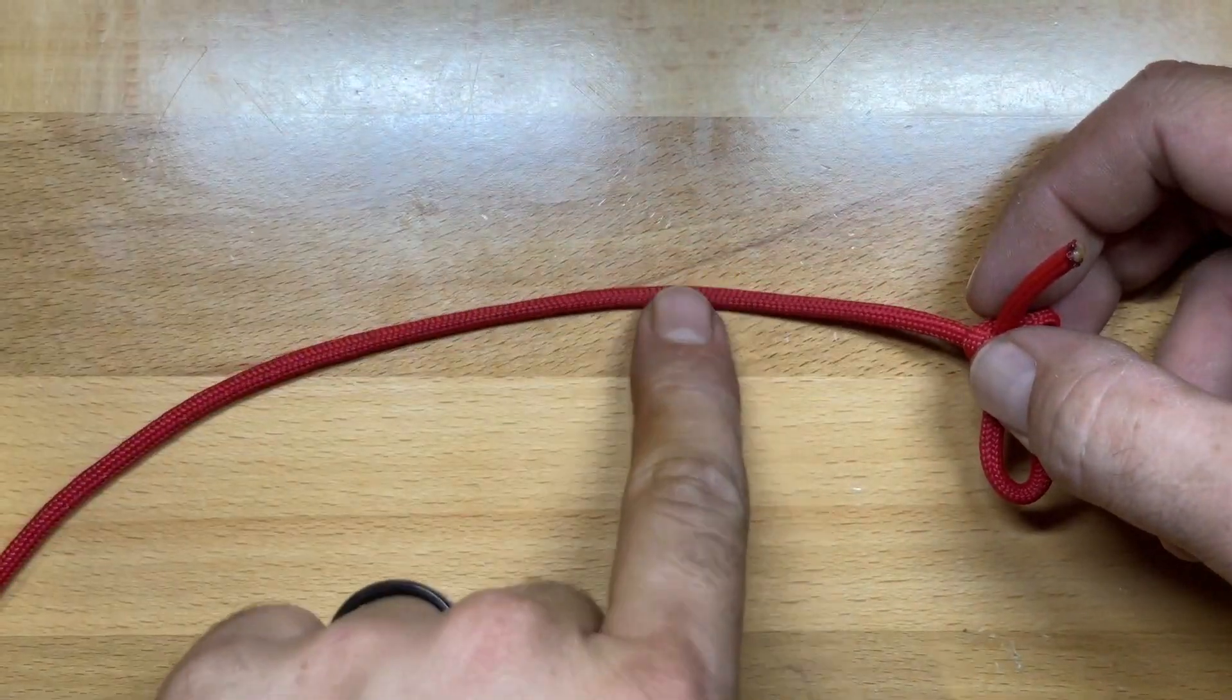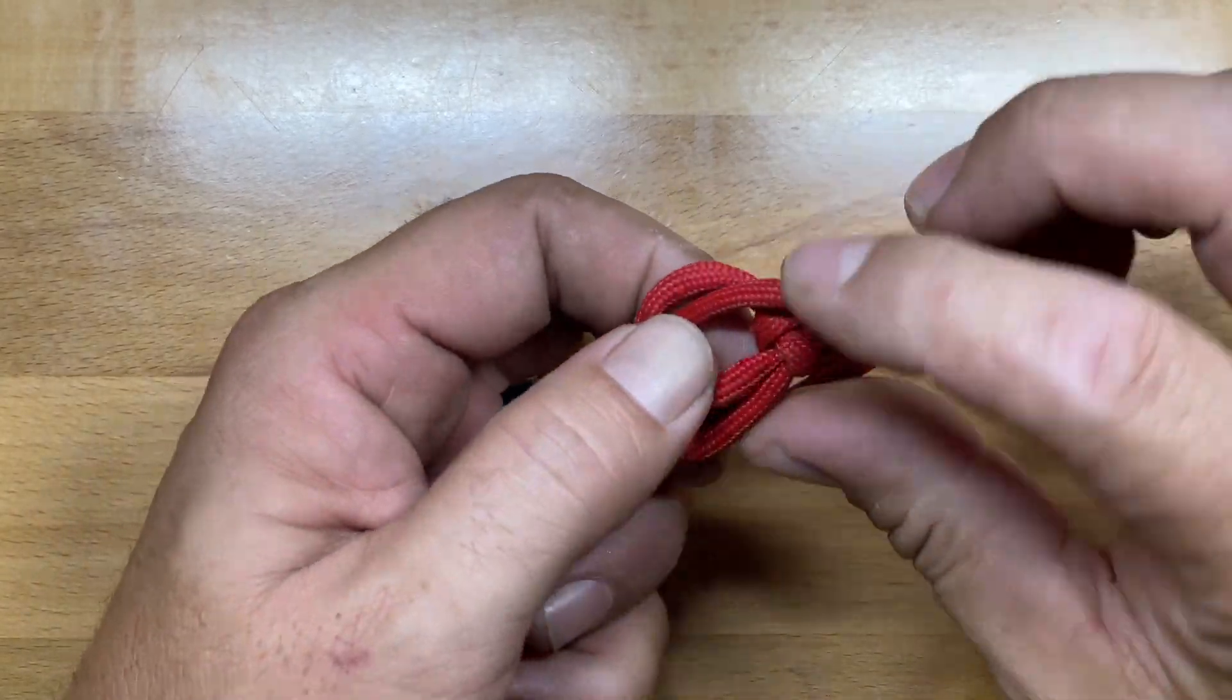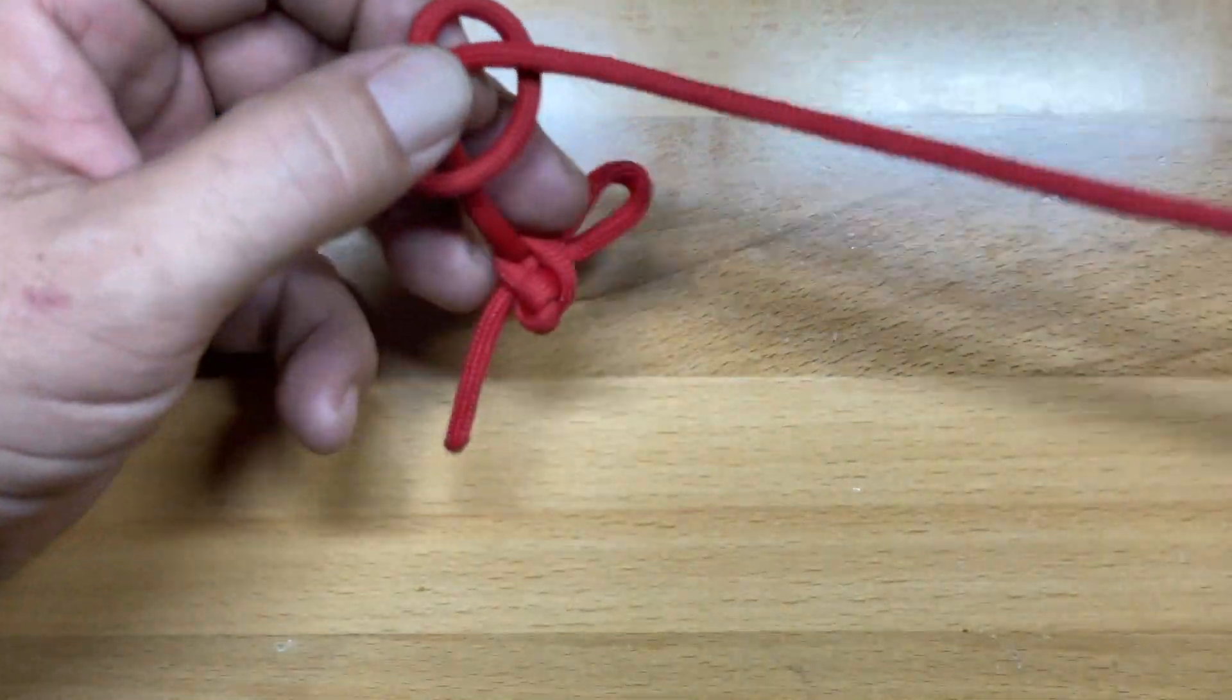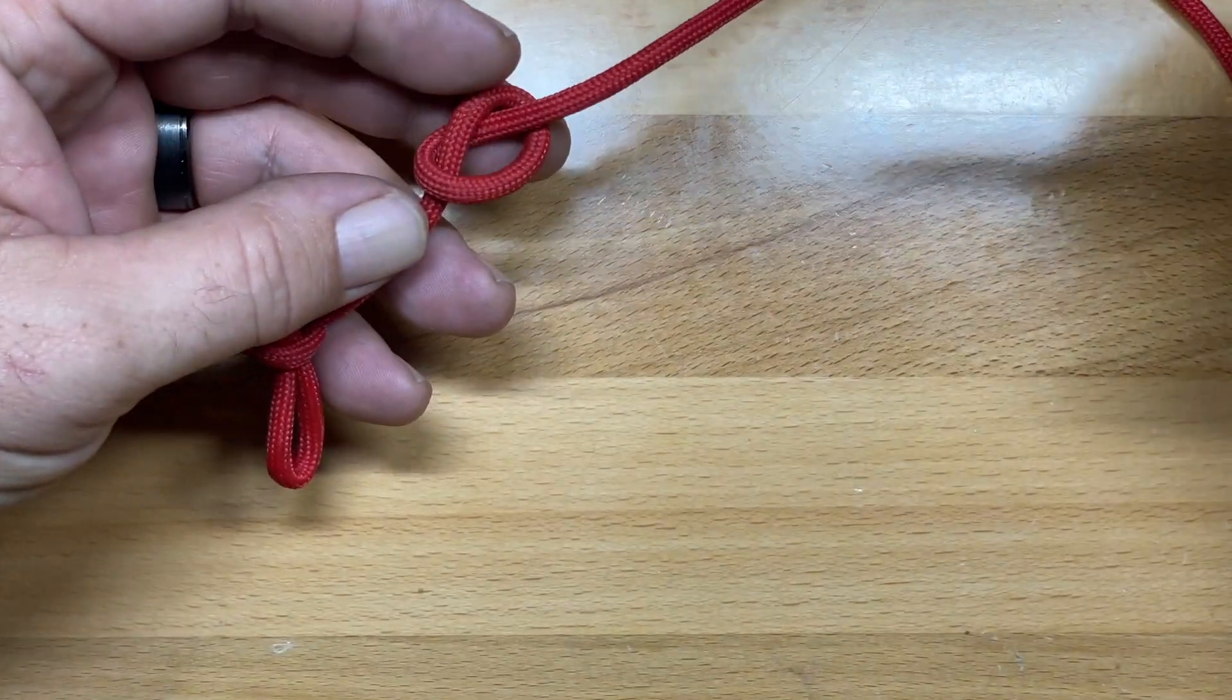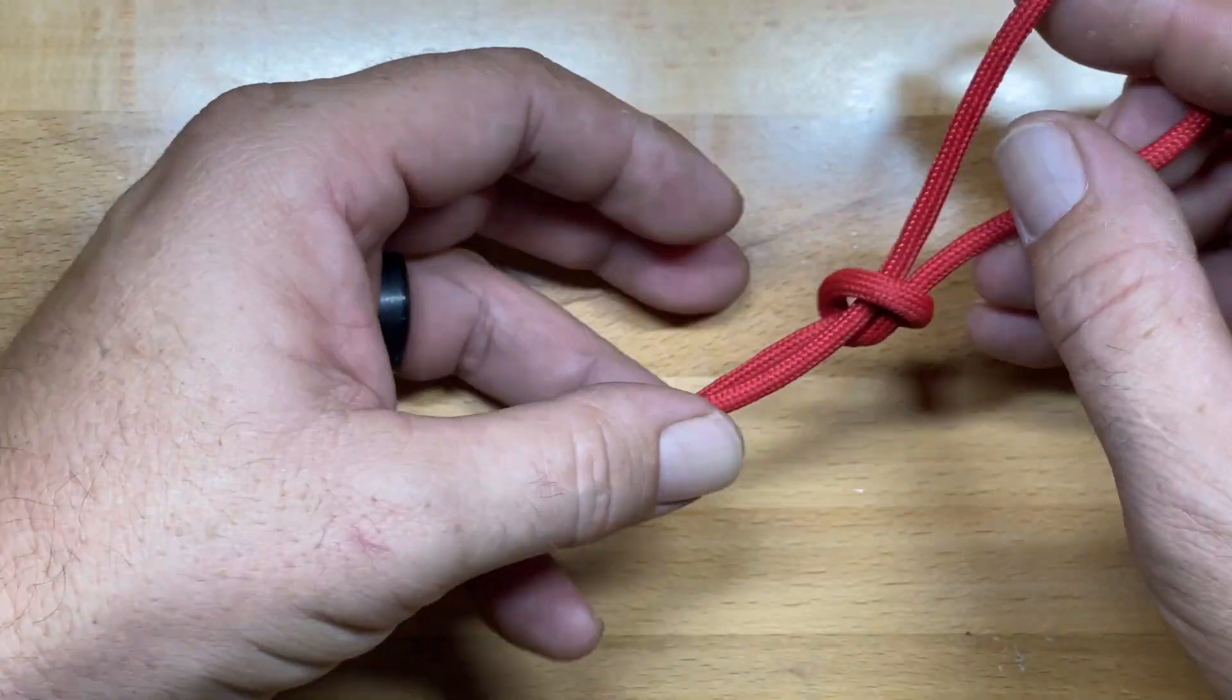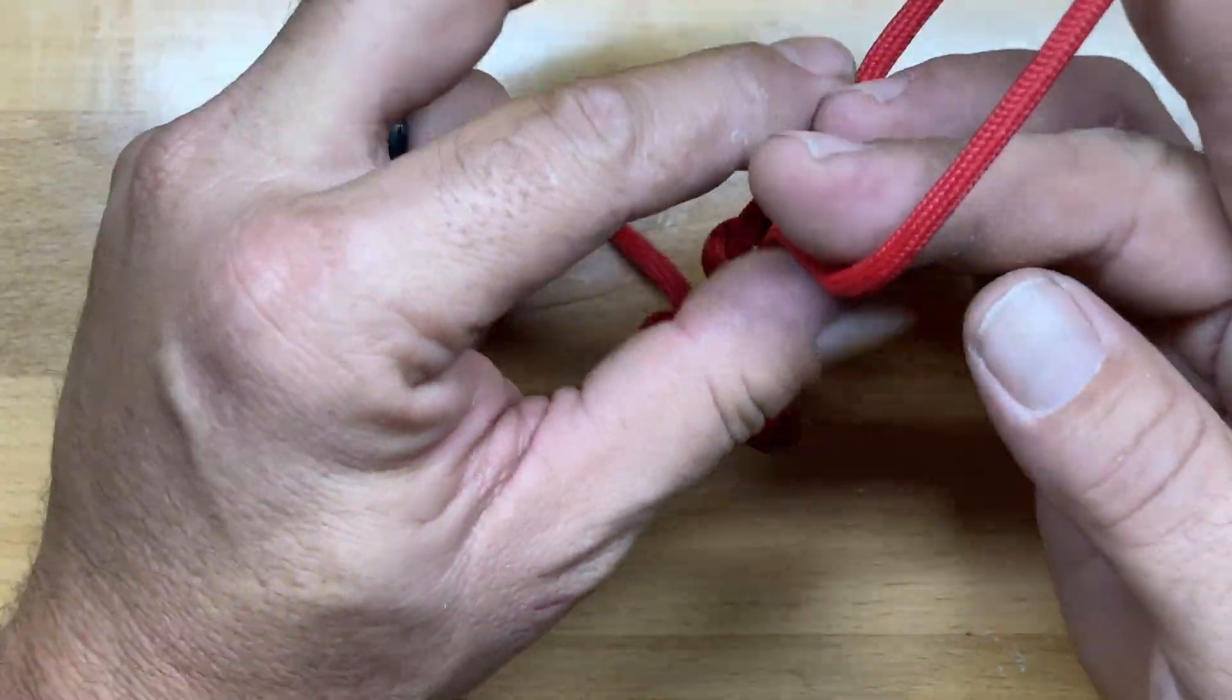Now the next thing we need to do is create just a small overhand knot a little further up the line. It's just a simple overhand knot that pretty much everybody knows. Now we're going to take the tail end, or the other end of our makeshift tourniquet here, and send it through that overhand knot. And now what we've done is we've created a slip knot that will lock against itself.